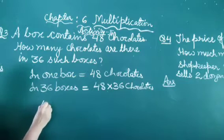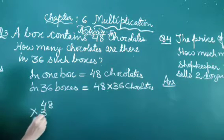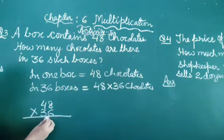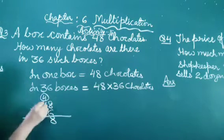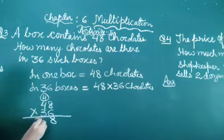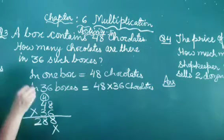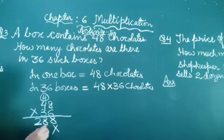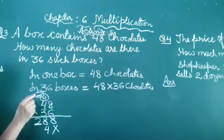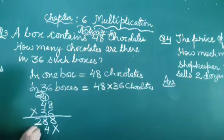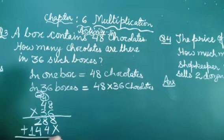We do the working here. 48 multiplied by 36. 6 eights are 48, we write 8 and carry over 4. 6 fours are 24, plus 4, 28. Put cross here. Then 3 eights are 24, and put 2 carry over here. 3 fours are 12, 12 plus 2, 14. Now we add these two.